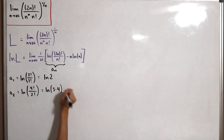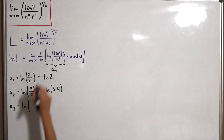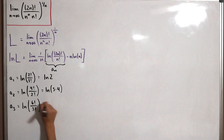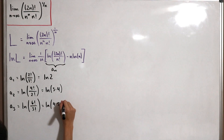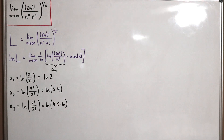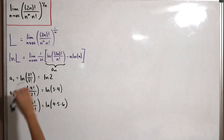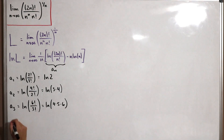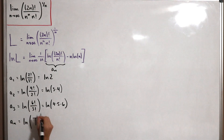For a_3 we have ln(6!/3!), which leaves ln(4·5·6). Analyzing these terms carefully, we see a multiplication pattern inside the expression depending on the index. We can generalize: the sequence a_n can be written as the natural log of a product series.